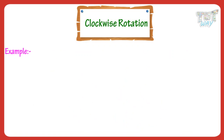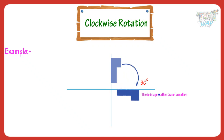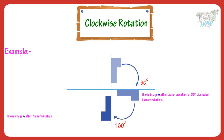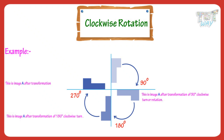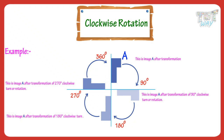Let's have a look at some examples. This is image A after a transformation of 90 degree clockwise turn or rotation. This is image A after a transformation of 180 degree clockwise turn or rotation. This is image A after a transformation of 360 degree clockwise turn or rotation. We see that on rotation of 360 degrees we get the same image.